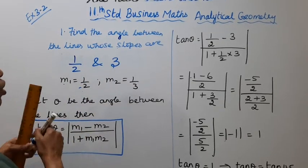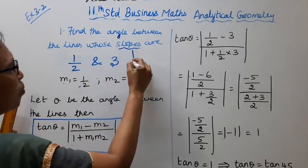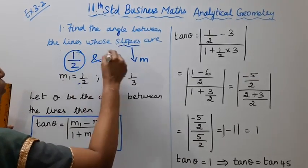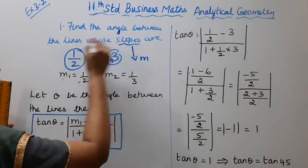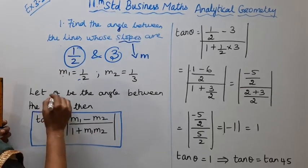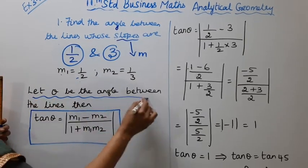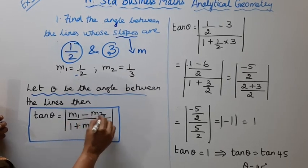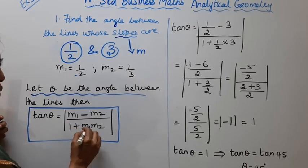Slopes are given. We already learned this in 10th standard. Slopes 1 by 2 and 3, find the angle between the lines. Let theta be the angle between the lines. Tan theta equal to modulus of M1 minus M2 divided by 1 plus M1 into M2.